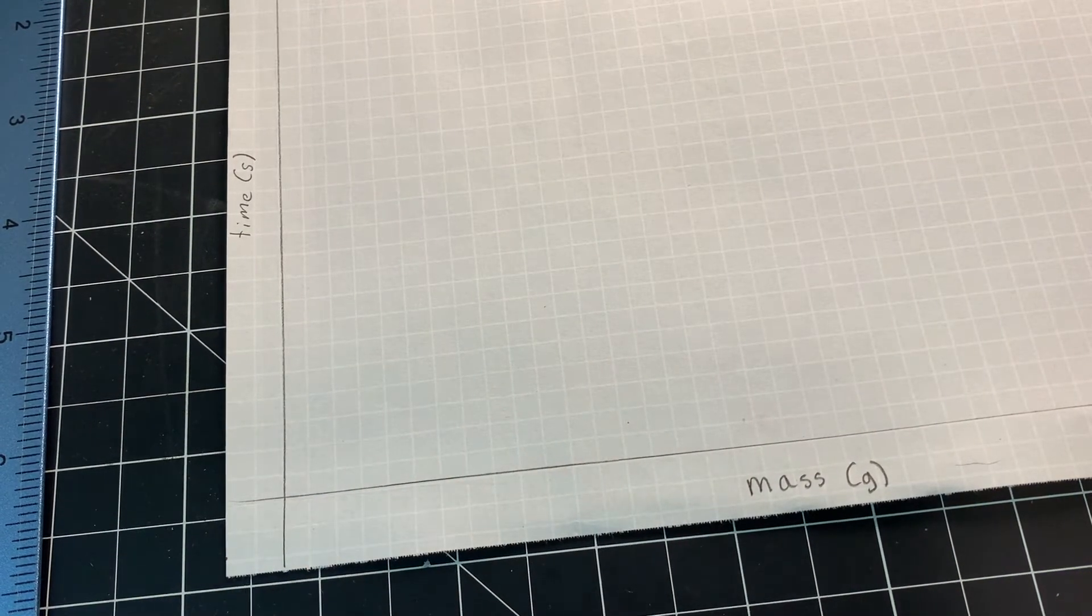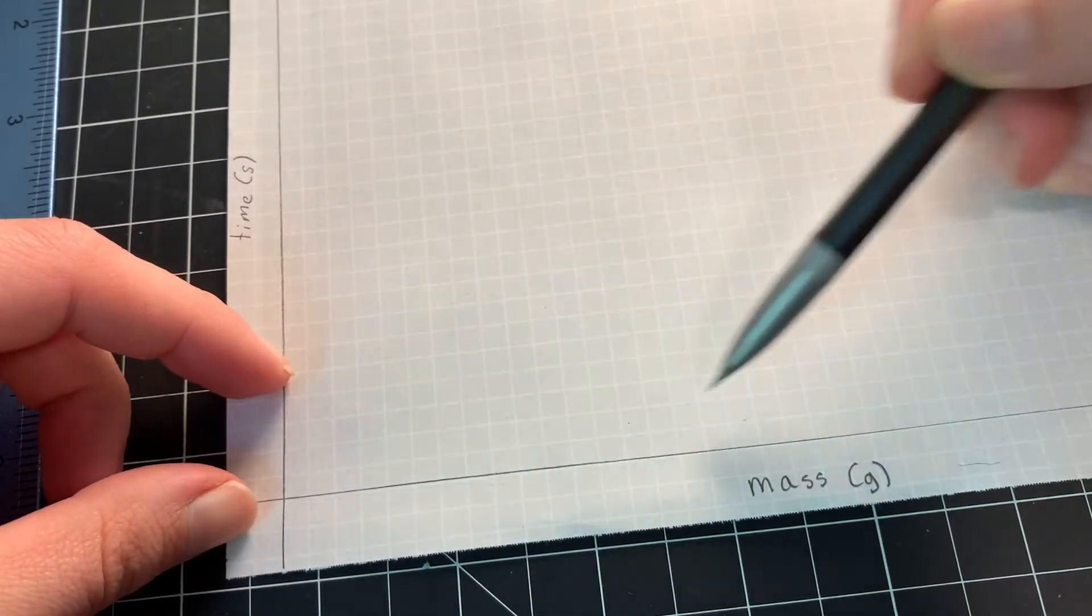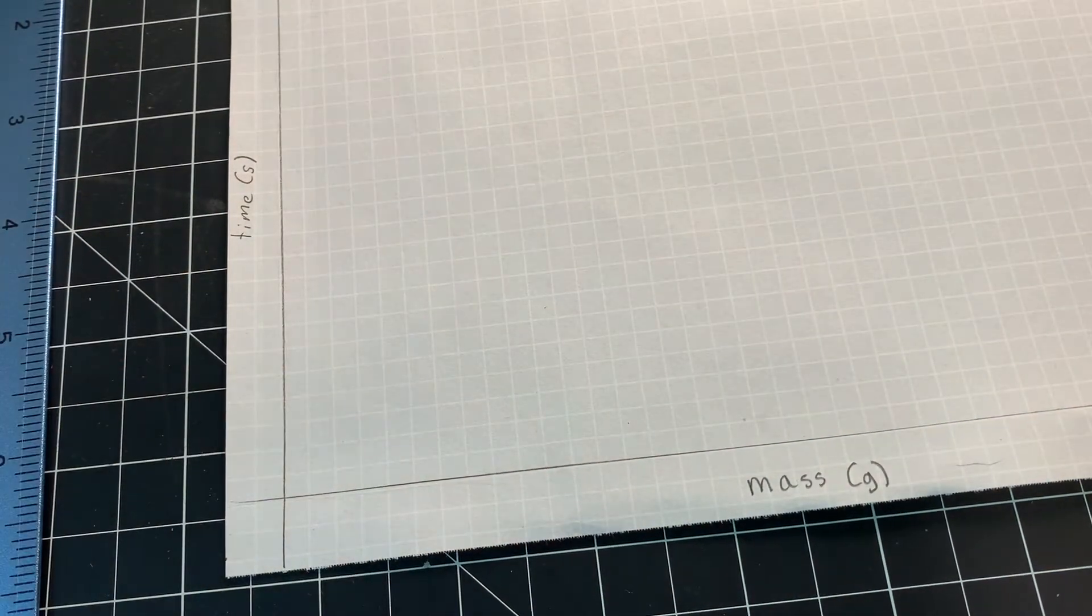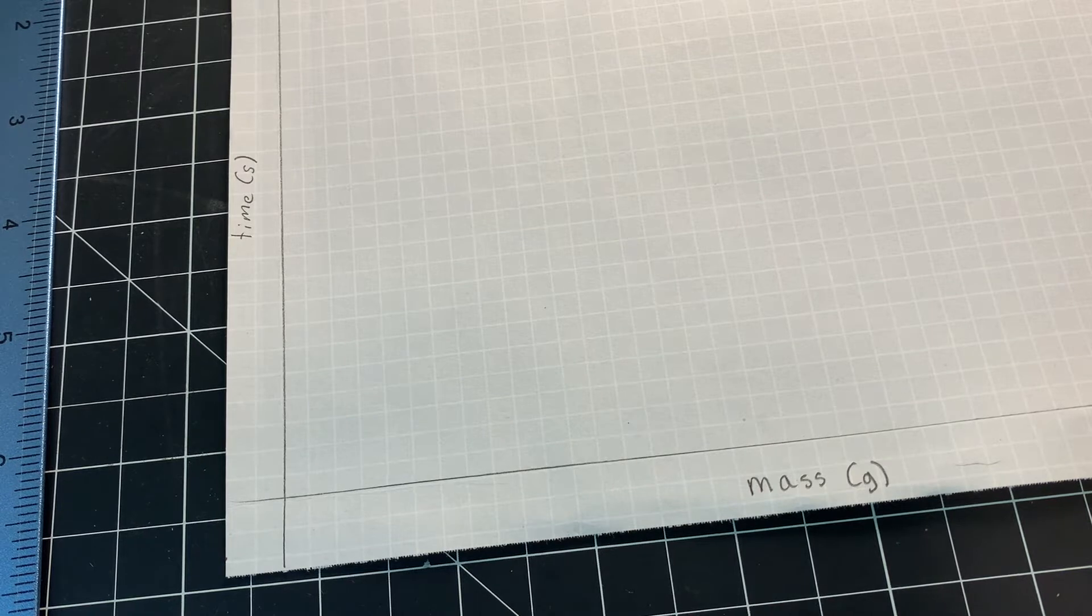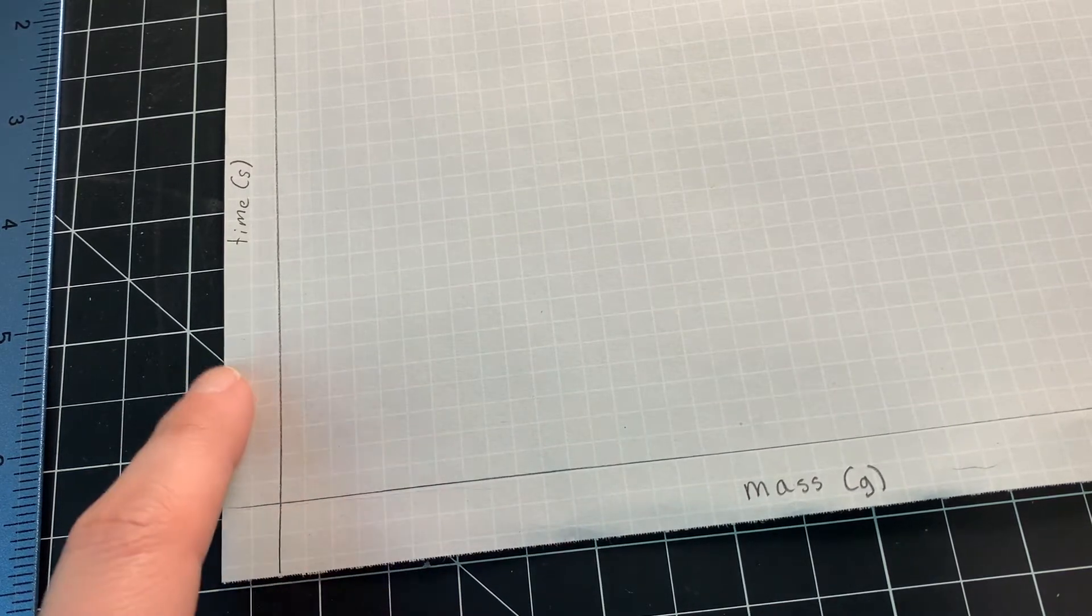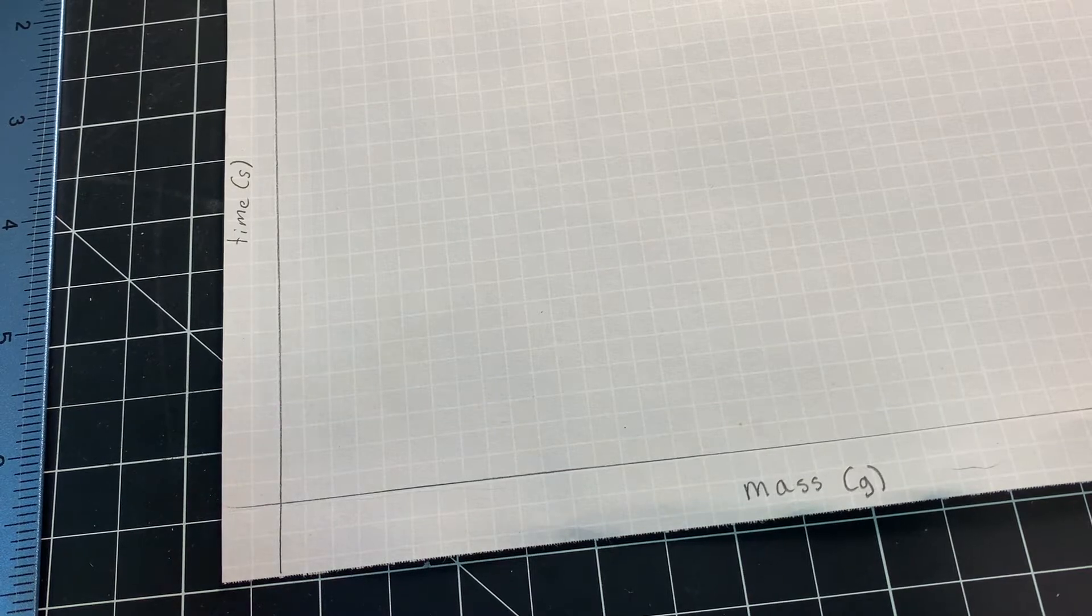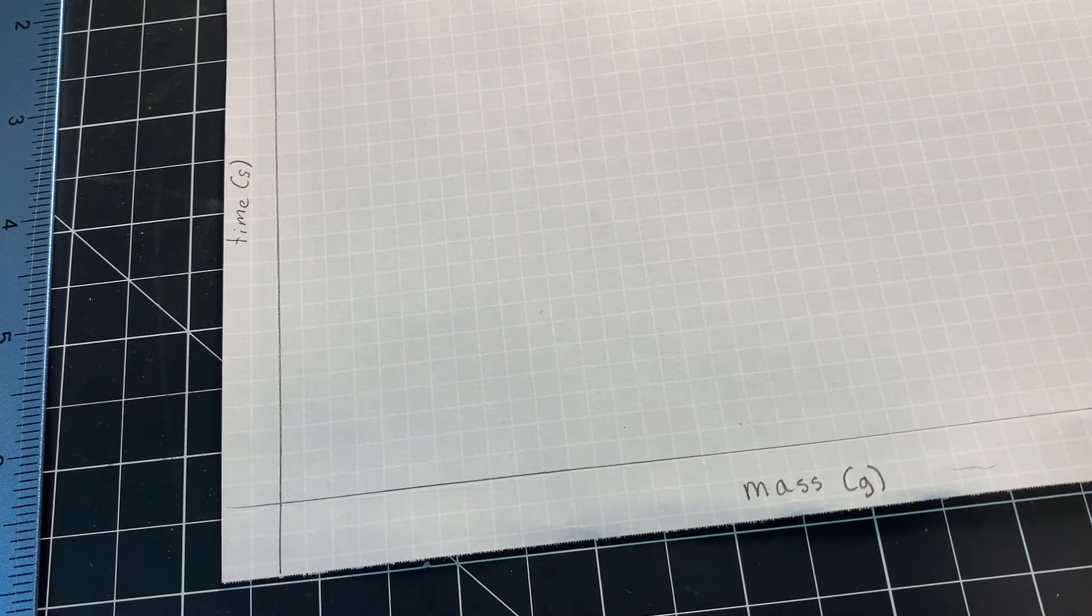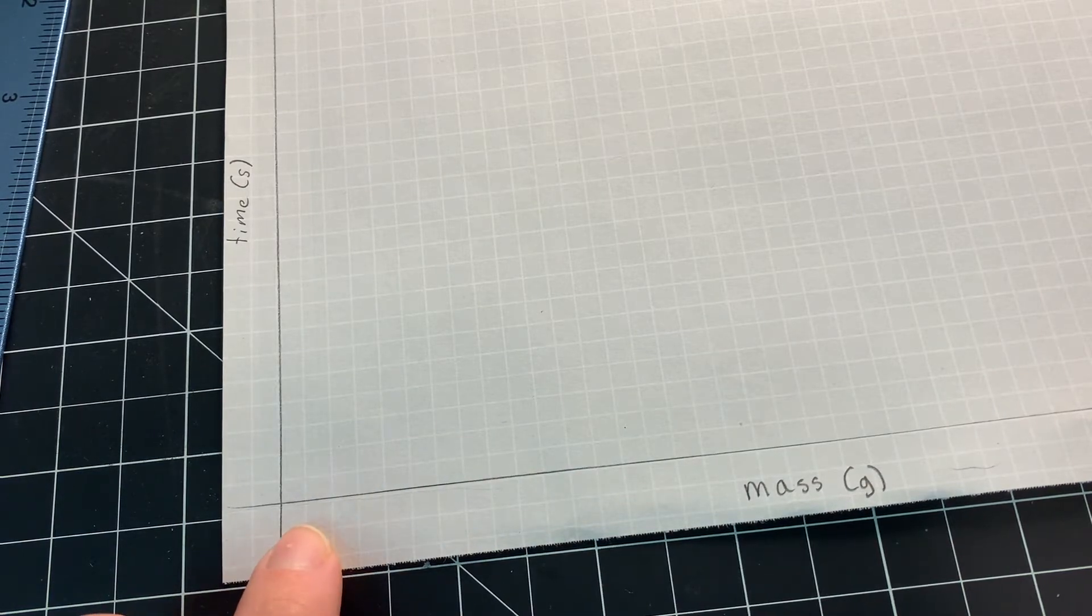Now the next step is going to be determining our scale. So you want to think about how many blocks you have and how much you have to cover. For most people you should have around 50 blocks and you probably don't have any masses bigger than a kilogram.